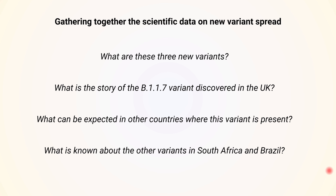Hello, this video gathers together the scientific data on the spread of the new coronavirus variants. The video will cover what these three new variants are and will focus mostly on the story of the B.1.1.7 variant that was discovered and has spread in the UK. We'll look at what can be expected in other countries where this variant is present and we'll also look at what is known so far about the other variants identified in South Africa and Brazil.